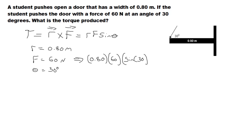Well, the sine of 30 is one half, so that gives us 0.80 times 60 times 0.5, one half. Well, this is one half of 60, which is 30.